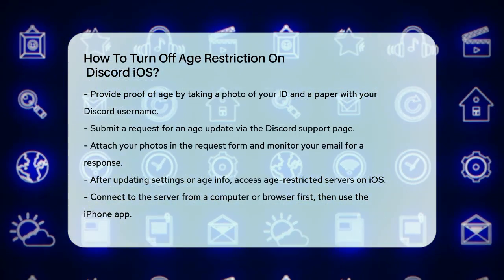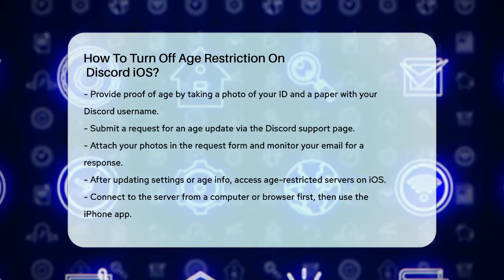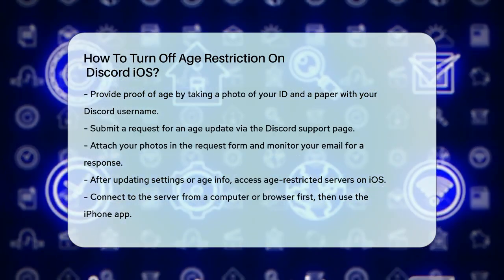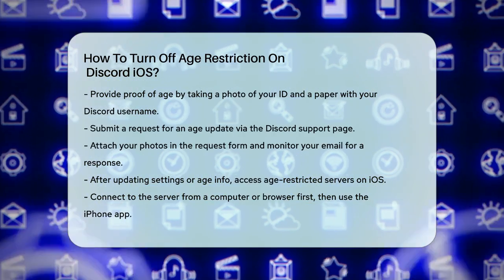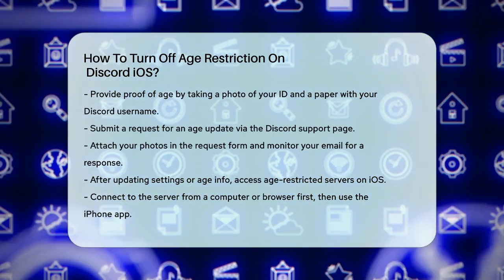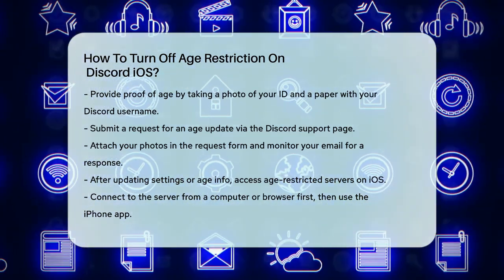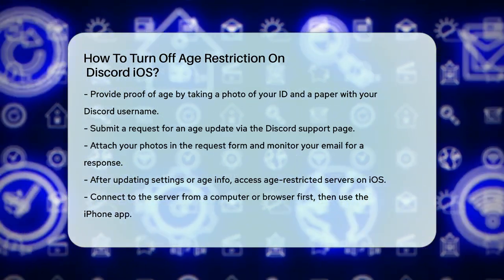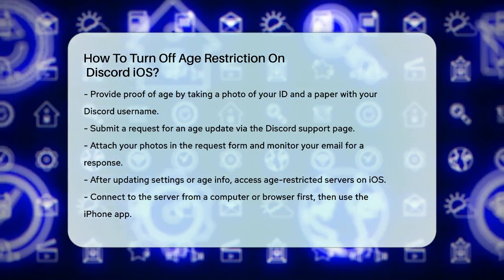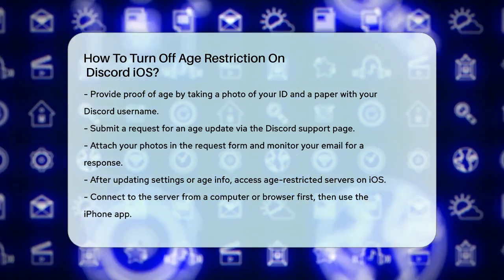After you've updated your settings or your age information, you should be able to access age-restricted servers on your iOS device. Just connect to the server from your computer or browser first, and then you'll be able to access it from your iPhone app. By following these steps, you'll be able to enjoy all the features of Discord without the age restriction barrier.